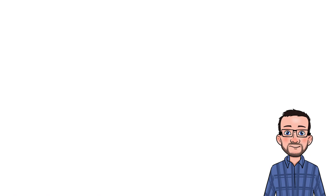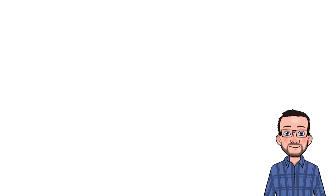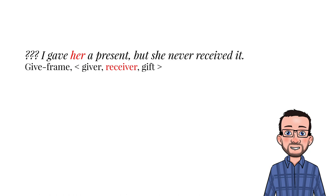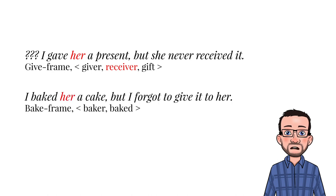These constructions, which Goldberg calls argument structure constructions, express abstract semantic frames. We know that the meaning of the verb give always implies a recipient, because it's a contradiction to say I gave her a present but she never received it. The word to bake, however, does not imply a recipient, because you can perfectly say without contradicting yourself: I baked her a cake, but I forgot to give it to her. You may have intended her to be the recipient, but something may have come in between.